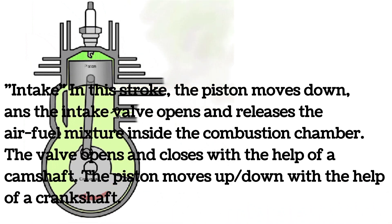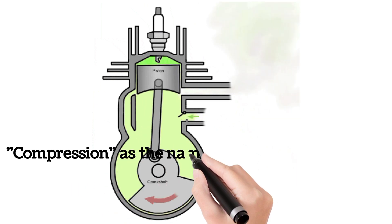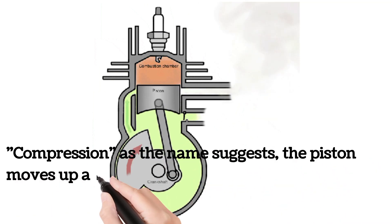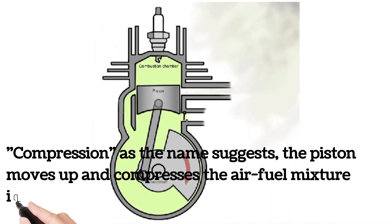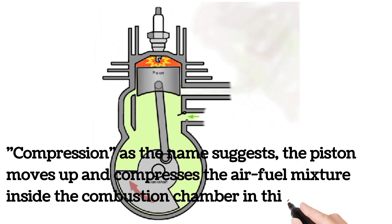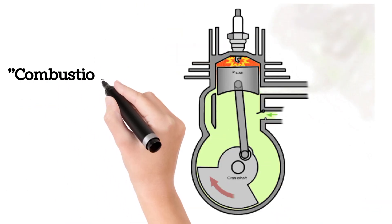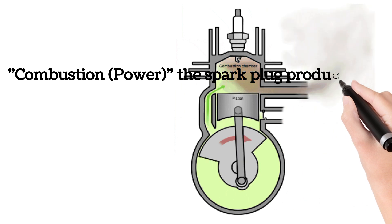The piston moves up and down with the help of a crankshaft. Number two: Compression. As the name suggests, the piston moves up and compresses the air-fuel mixture inside the combustion chamber in this stroke.